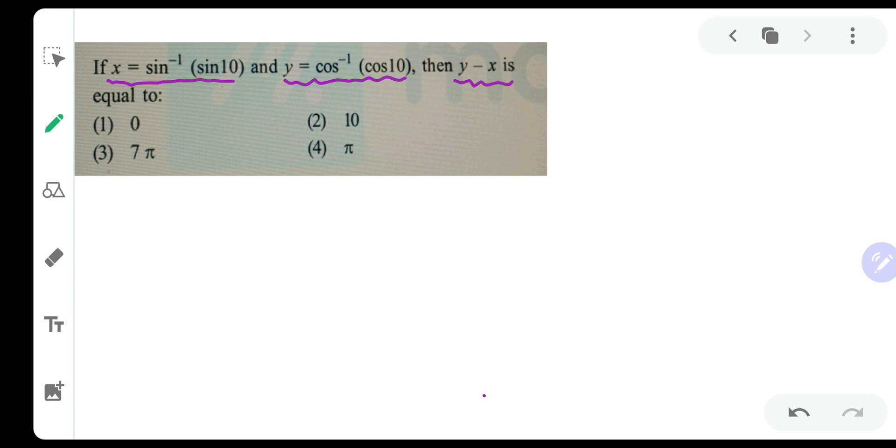First of all you should know a few things. Sin inverse of x belongs to minus pi by 2 to pi by 2. It means it can only fetch answers in this particular range. And cos inverse of x belongs to 0 to pi. It means cos inverse x can only fetch you the answers from 0 to pi.